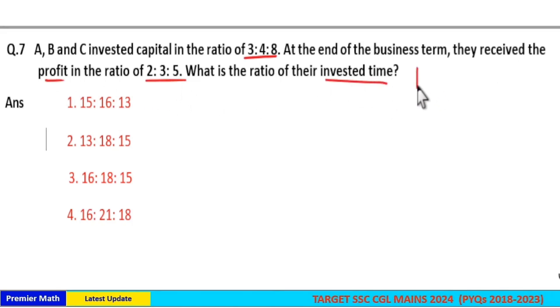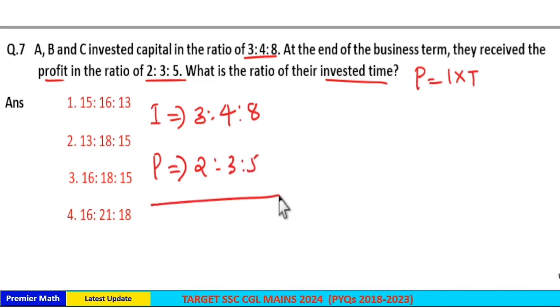We already know profit is equal to investment into time. Then here, investment ratio is 3:4:8, and profit ratio is equal to 2:3:5.